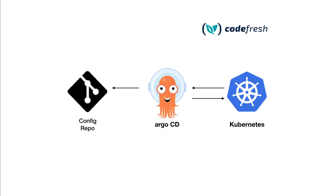In GitOps, you put these manifests in a Git repository, and GitOps tools like Argo ensure that these manifests in Git are applied to the Kubernetes cluster. Whenever you commit a new change to these manifests, Argo makes sure that these desired declared manifests match with what's running in the Kubernetes cluster.